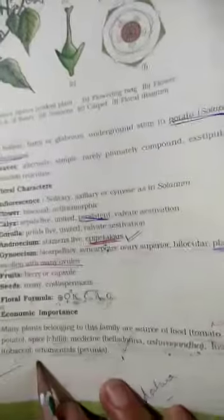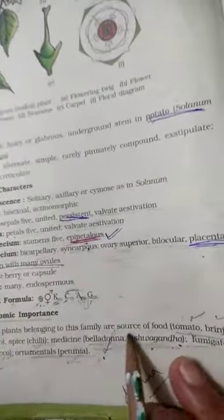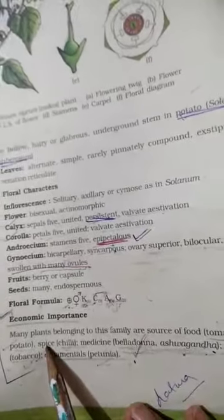Now it comes to the economic importance of this class. In this class, various vegetables belong which are used as food: tomato, brinjal, potato, chili, which is also used as spices.